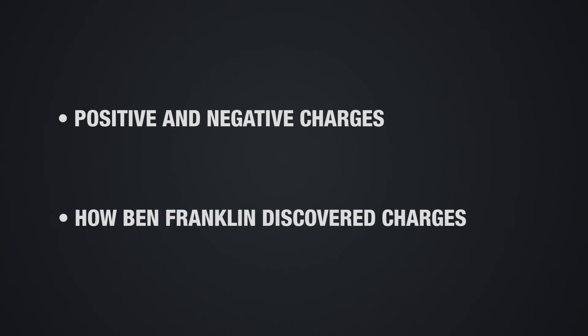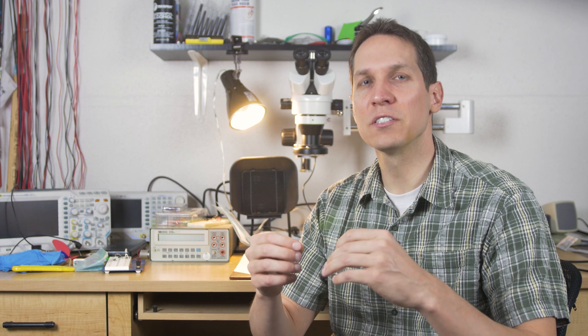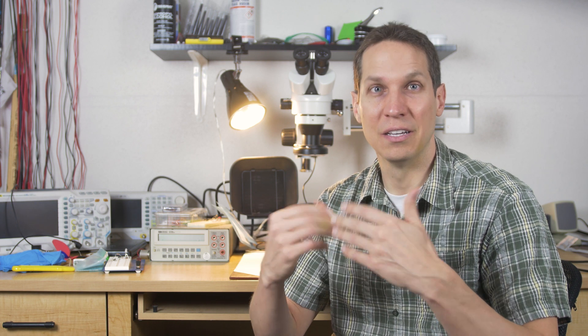So now we know a bit more about positive and negative charges and how Benjamin Franklin discovered these differences. Next, we're going to talk more about electrons, how they work and flow, and the difference between insulators, conductors, and semiconductors. If you have any questions, leave it in the comments below and if you found this interesting or helpful, please subscribe to our channel and like this video.